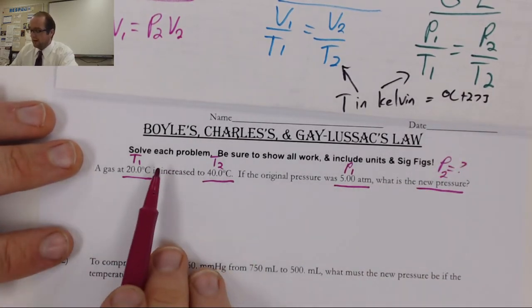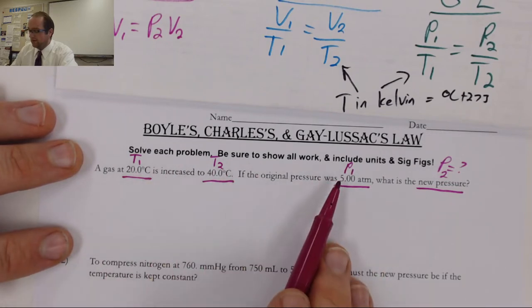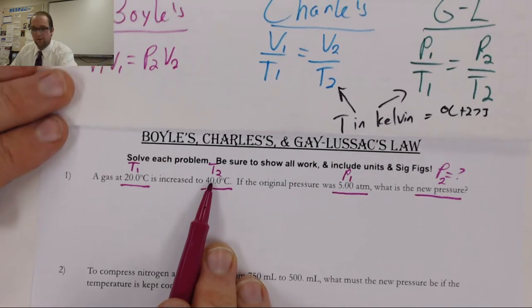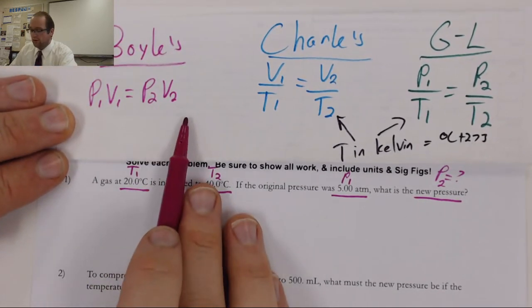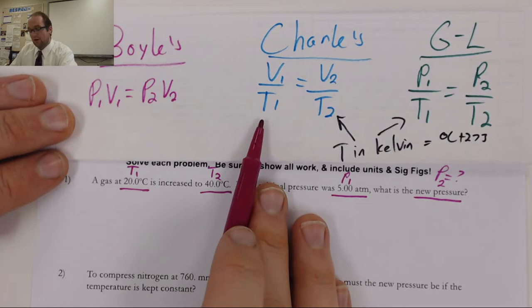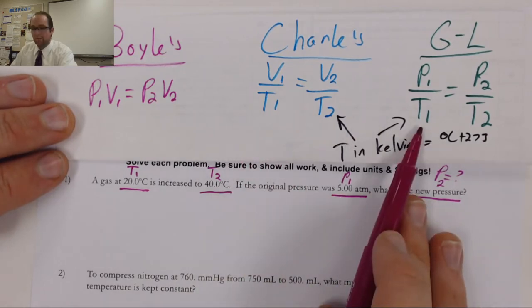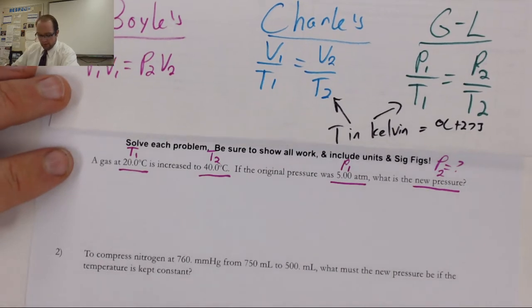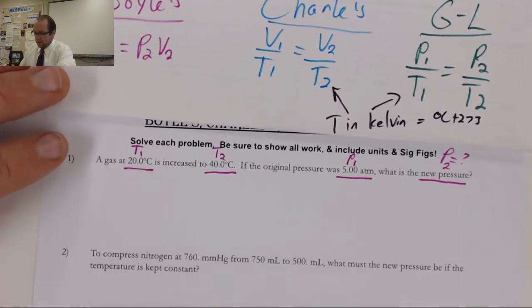So, I'm going to look at my different equations. Which one of my equations involves a change in pressure and a change in temperature? Pressure and volume? Nope. Volume and temperature? That's temperature. Nope. Oh, but here, Gay-Lussac's law has pressure and temperature. So, I know that I'm going to be using that equation in my setup.